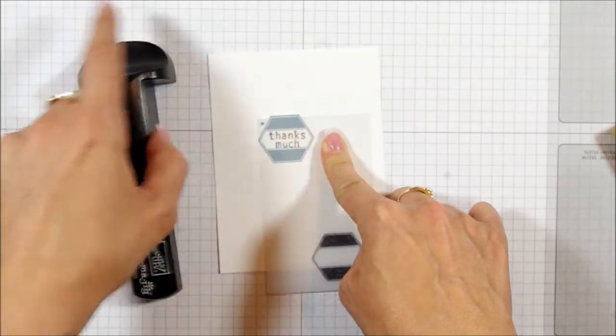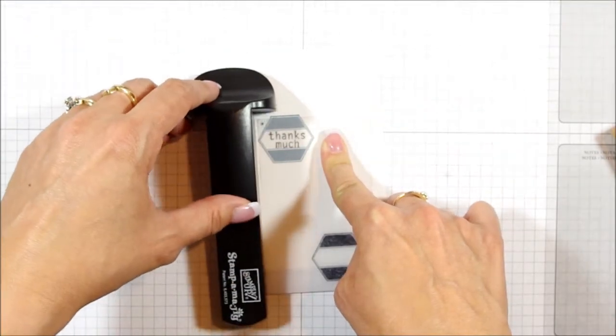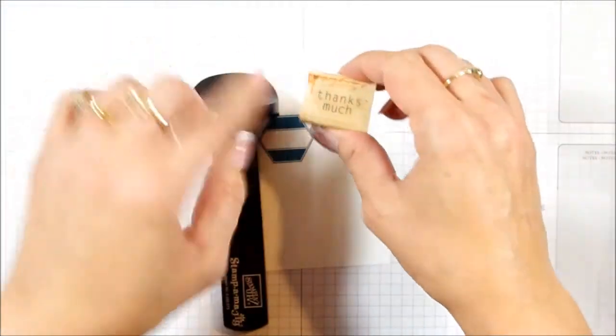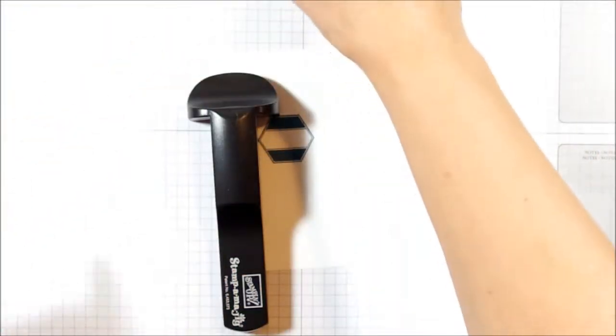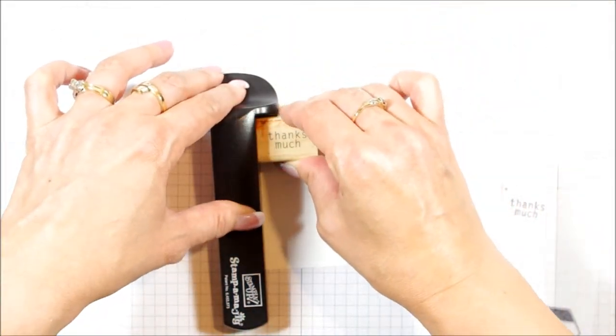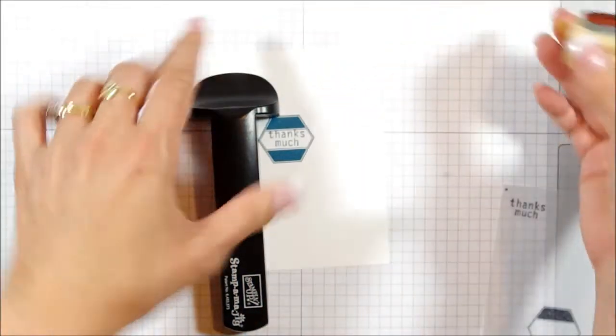Again, you can see the dot is right here. Put that into its corner. And then I have also put a dot exactly on my stamp so that I know that that's the part that goes into the corner. And stamp it down, and there you go.